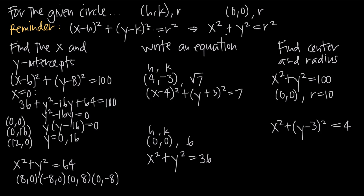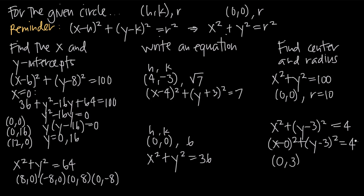For a more complex equation, we match it to the first formula. We can rewrite it as (x minus 0) squared plus (y minus 3) squared equals 4. Comparing with (x minus h) squared plus (y minus k) squared equals r squared, we see h equals 0 and k equals 3, so the center is (0, 3). Since 4 equals 2 squared, the radius is 2. That's how you work with the equation of a circle to solve problems like these.